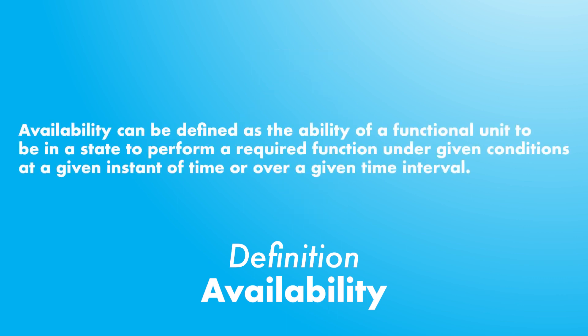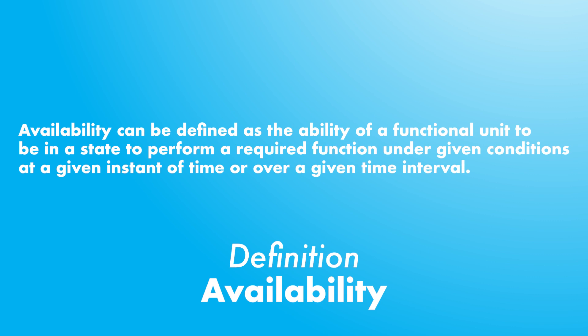Availability can be defined as the ability of a system to be in a state where it can perform its required function in a certain environment, under given conditions, at a given instant of time or over a given time interval. The classification of availability is flexible — it varies according to the definition of downtimes and the time span to which it refers. For example, you can define availability for a given time instance or for a given time interval.